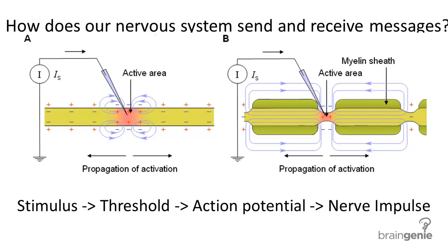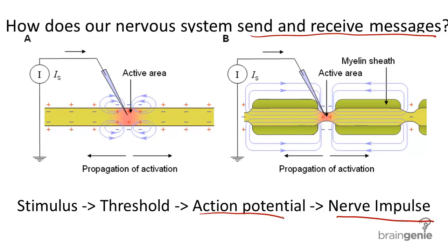How does our nervous system send and receive messages? This response is driven by what's called a nerve impulse — an electrical charge traveling the length of a neuron caused by a stimulus. This is also known as an action potential.